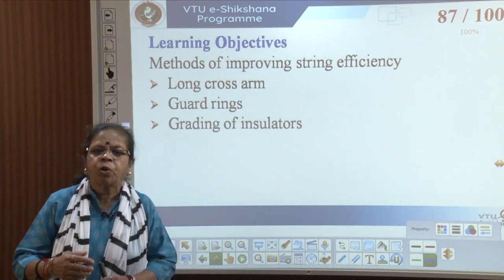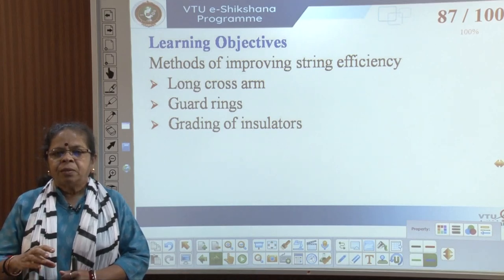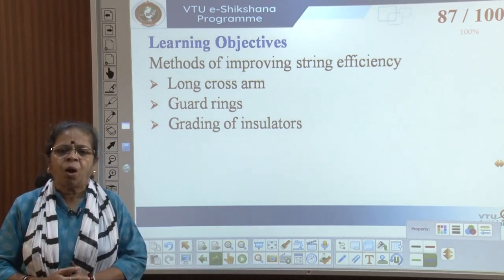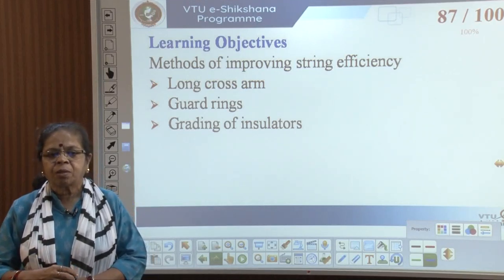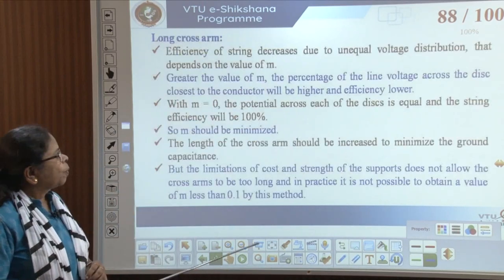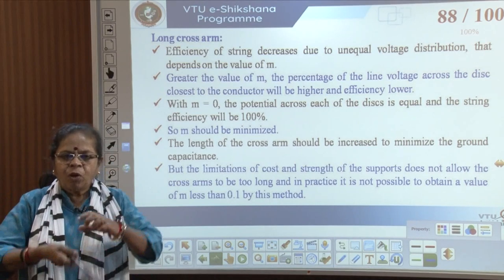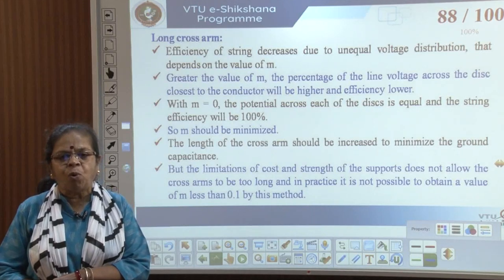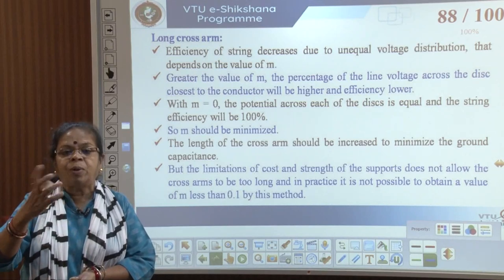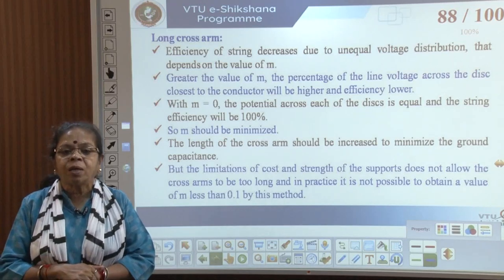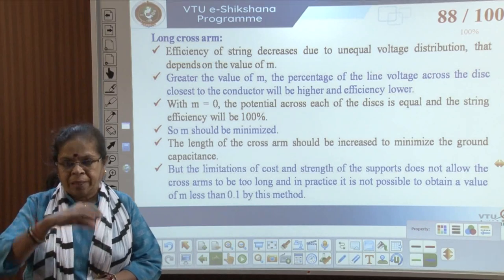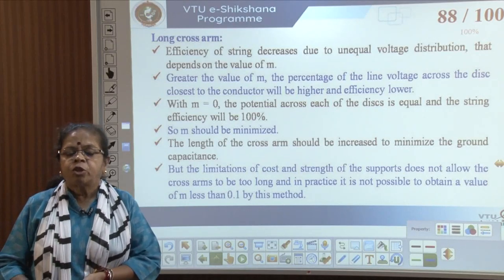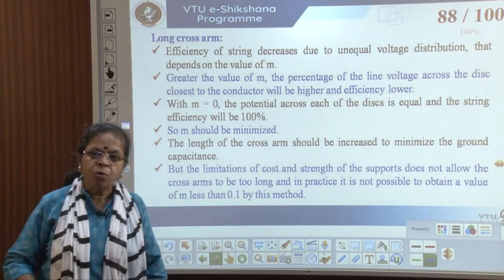The conclusion is that voltage distribution is not uniform across the individual disks of a suspension type insulator. Let us see how we can improve string efficiency. The first method is using long cross arms, which reduces the value of M — a smaller M gives more uniform voltage distribution. However, the length of the cross arm is limited by cost and strength of supports. The best achievable value of M using this method is about 0.1.